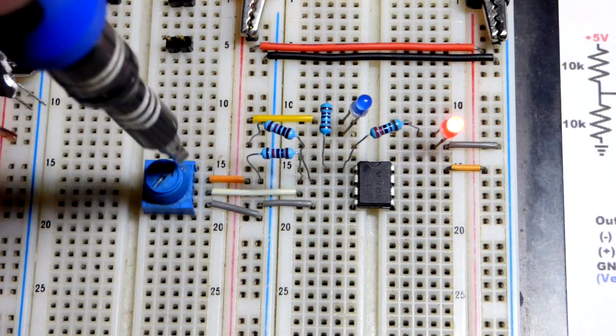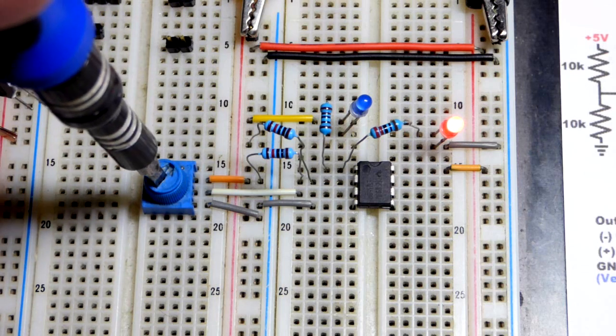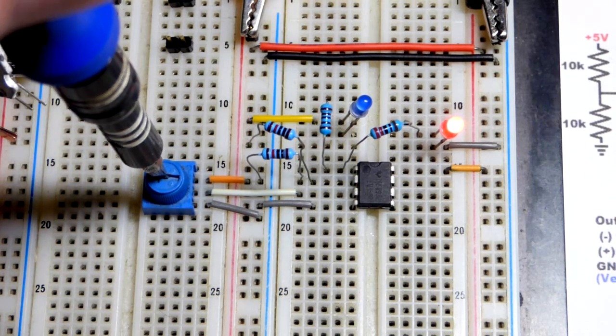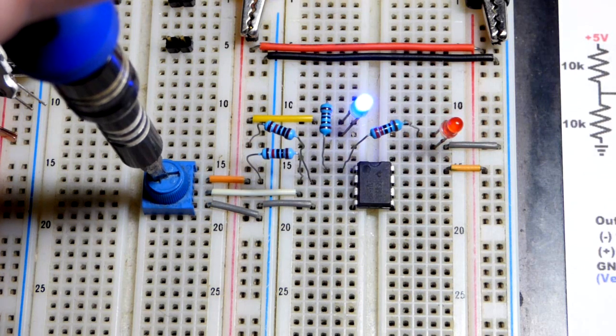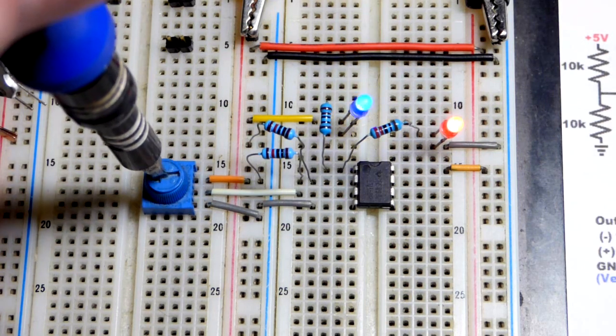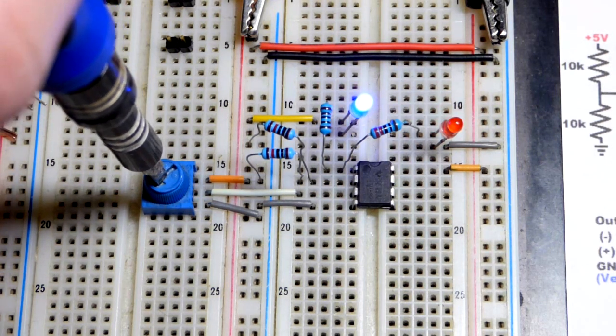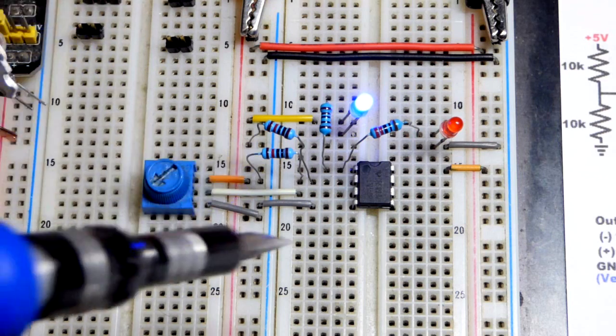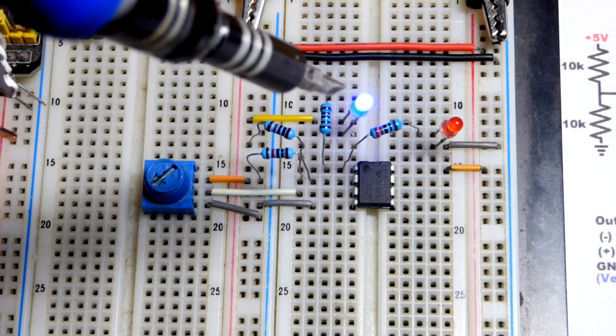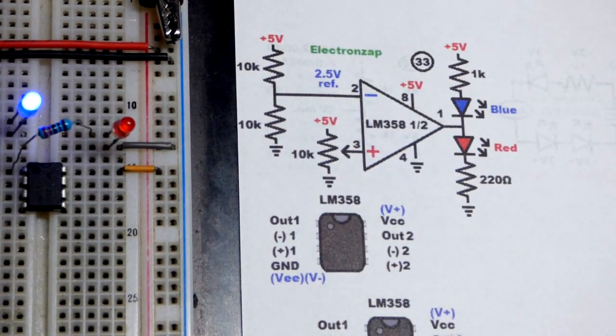And this is above 2.5 volts because this is a trim pot wired as a voltage divider. When we drop below about halfway, because then at that point there will be equal resistance on each side, we drop below that, now there's less resistance on the negative supply. The voltage drops below 2.5 volts, and we have a low output. That's the way that we wired this up.